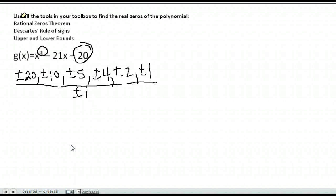So my possibilities are 20, 10, 5, 4, 2, and 1, both the positive and negative. What you want to do is just go ahead and pick one of those to start with and do synthetic division.